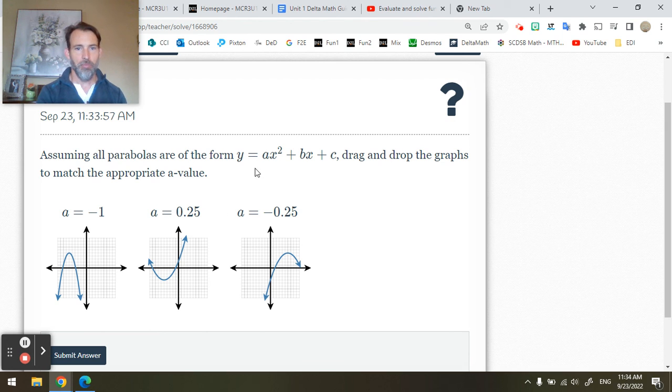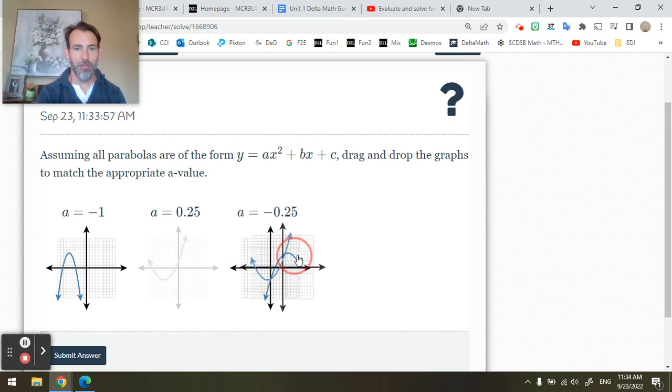If the parabola was being multiplied here by a number that's smaller than one, I know it's going to be flattened. So I can move these around so they match the appropriate spots.